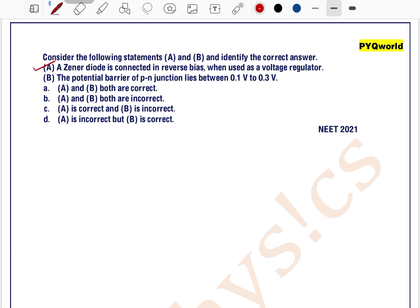Now, a Zener diode is a specially designed diode which is used only in reverse bias for voltage regulation purposes. So option A is correct.